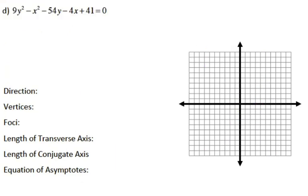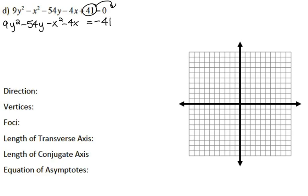Let's do another one. For this one, the equation is not in the correct form, so we're going to get it into the correct form. Since my Y is being squared and that one is the positive of my two variables, I'm going to put my Y's first. So I have 9y squared minus 54y minus x squared minus 4x, and then I'm going to move the constant to the other side, changing its sign. I'll factor out the coefficient in front of y squared: 9 times (y squared minus 6y), and insert a box to complete the square.